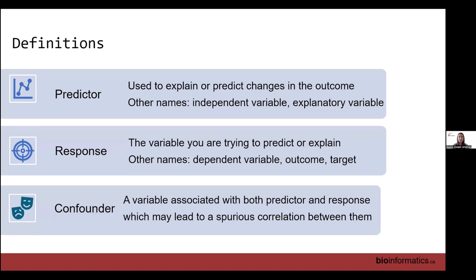I'm sure a lot of you already know this, but just to review some definitions to make sure everyone's on the same page, because I'll be flipping back and forth between different names. Predictor variables are used to explain or predict changes in your outcome — you might hear me call them an independent variable, covariate, explanatory variable, or predictor. Responses are what we are trying to predict or explain — also called dependent variable, outcome, target, or response. Confounders, also known as moderating variables in some disciplines, are associated with both the predictor and the response.